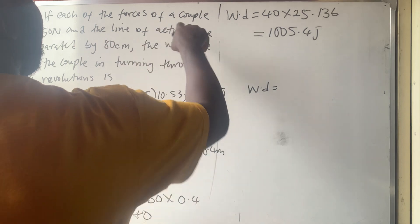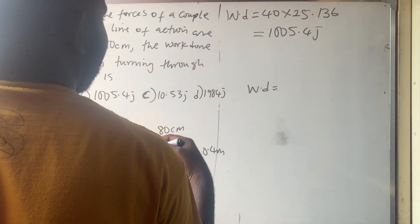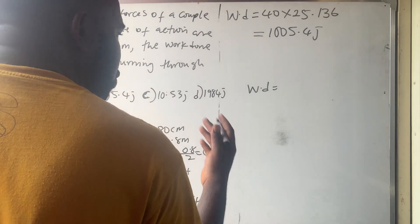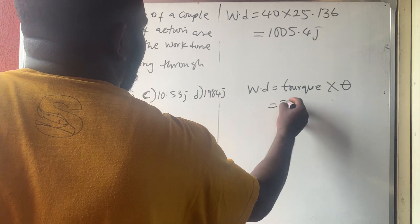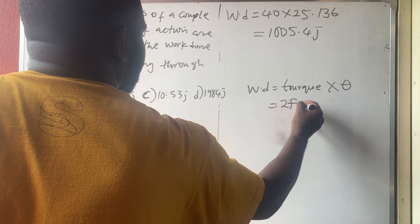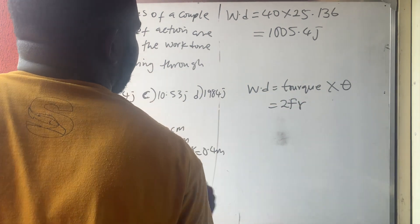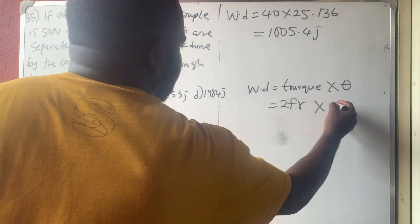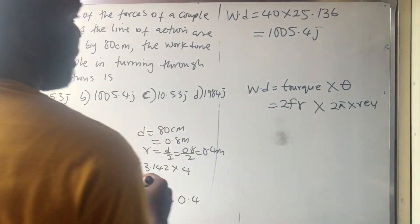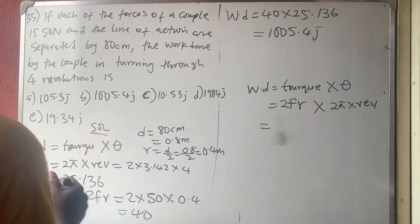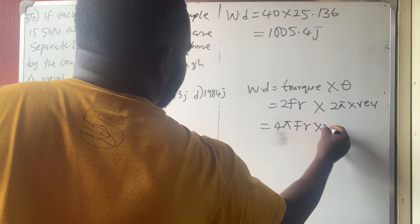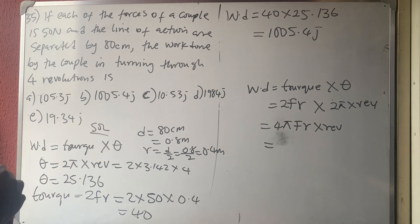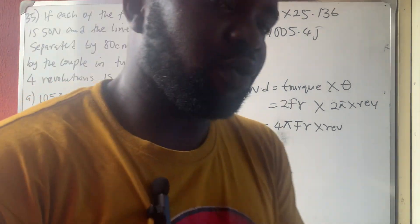Thank you for watching. Remember: work done by a couple = τθ, where τ = 2Fr and θ = 2π × revolutions. Combined, the formula is W = 4πFr × revolutions. Please subscribe and share with everyone who needs it.